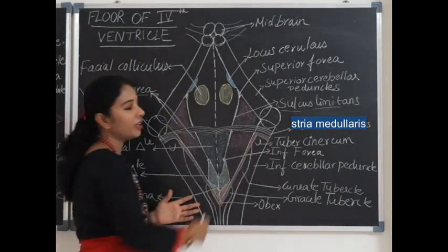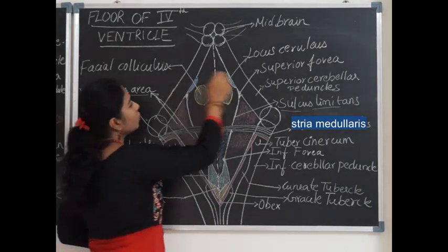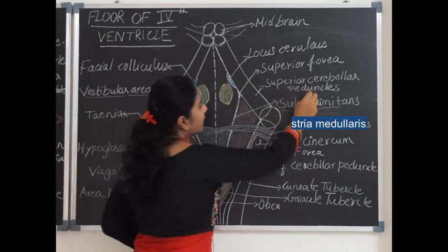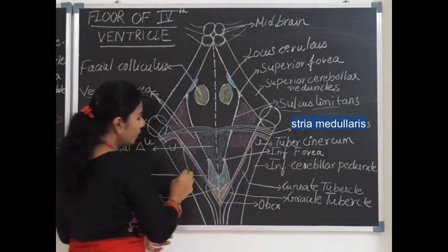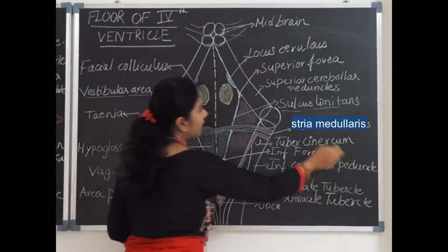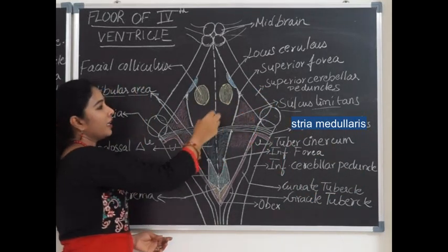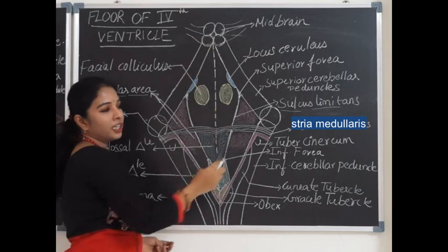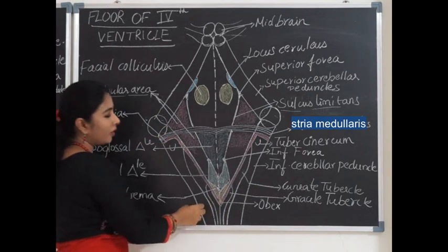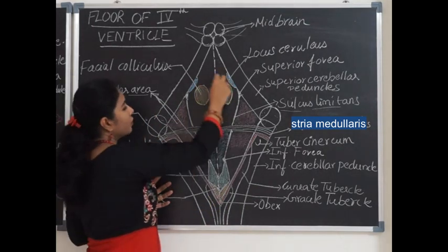The floor of the fourth ventricle appears as a rhomboid depression and is also called the rhomboid fossa. It has two superolateral boundaries formed by the superior cerebellar peduncles and two inferolateral boundaries formed by the inferior cerebellar peduncles. The superior cerebellar peduncle connects the midbrain with the cerebellum, and the inferior cerebellar peduncle connects the medulla with the cerebellum.